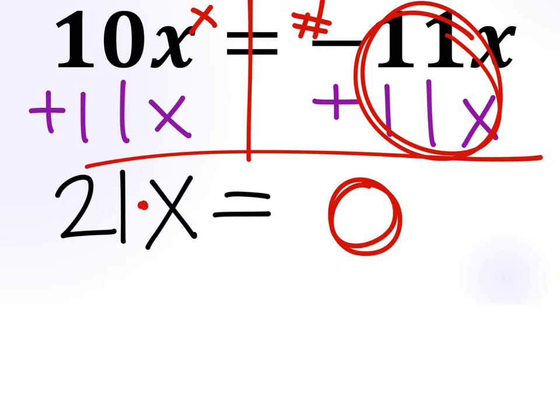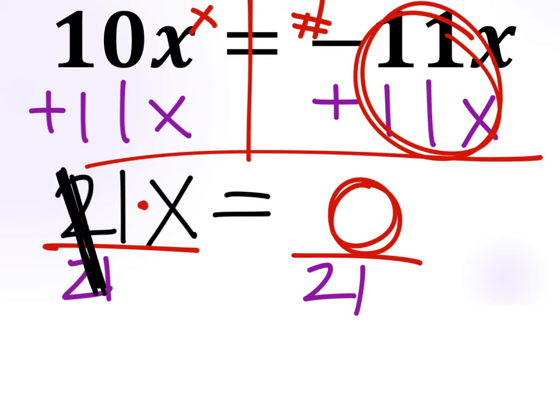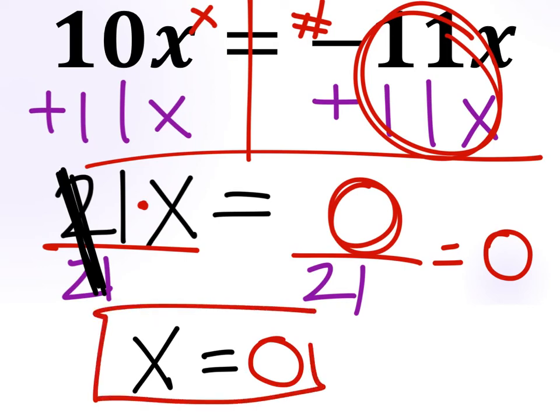This is 21 times x, so we're going to use the inverse operation by dividing both sides by 21. This gets x all by itself - it becomes 1 times x instead of 21 times x. So we have x equals zero divided by 21, which gives us zero. So x equals zero.